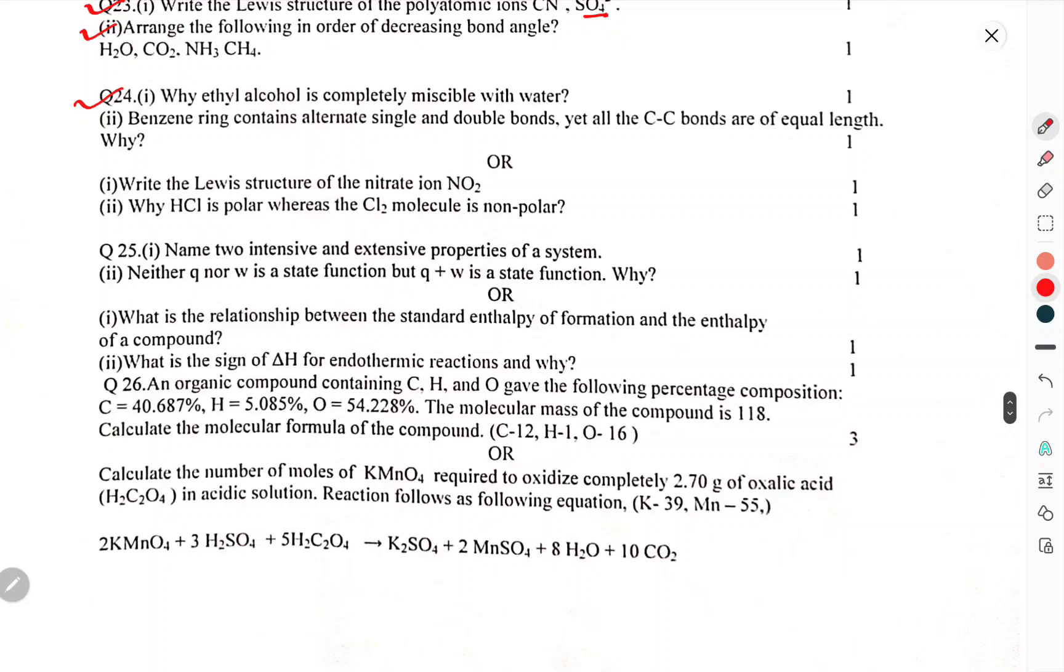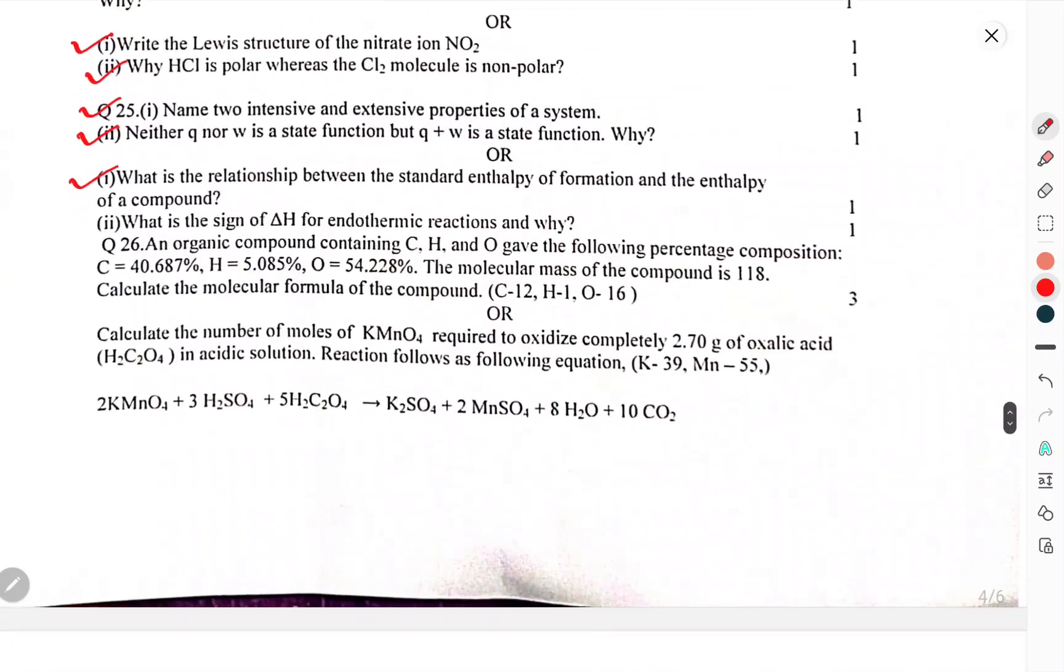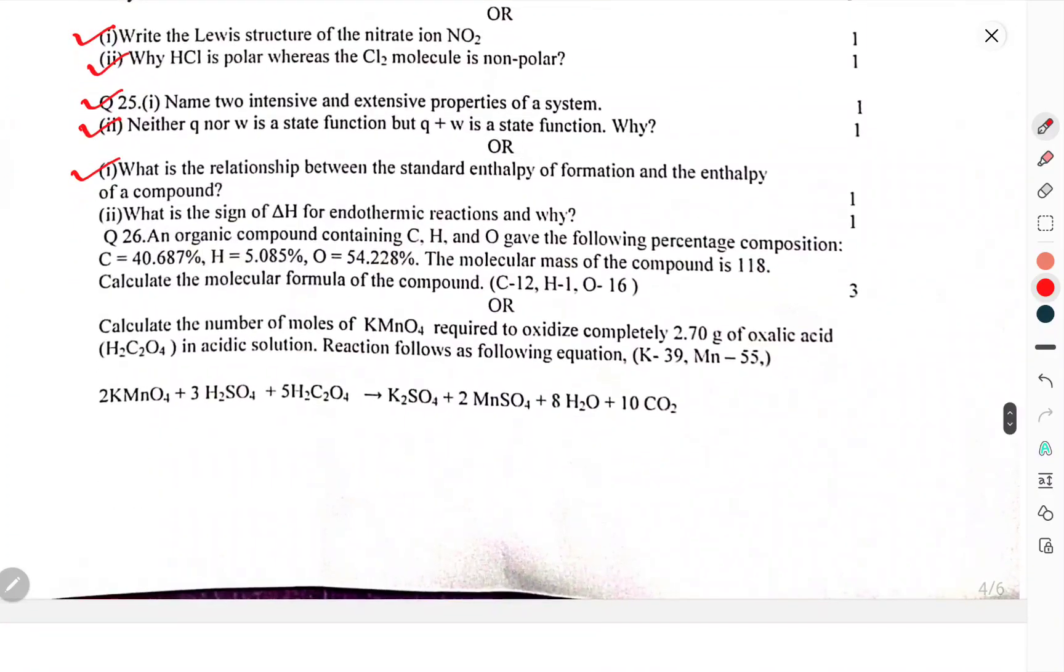Arrange the following in order of decreasing bond angle. Question 24: Why is ethyl alcohol completely miscible with water? Benzene ring contains alternate single and double bonds, yet all carbon-carbon bonds are equivalent. Why? Write the Lewis structure of the nitrate ion NO3-. Why is HCl polar whereas Cl2 is non-polar? Name two intensive and extensive properties of a system. Neither Q nor W is a state function, but Q + W is a state function. Why? What is the relationship between the standard enthalpy of formation and the enthalpy of a compound? What is the sign of ΔH of endothermic reaction and why?